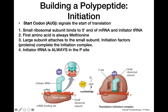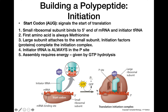Every subsequent tRNA is going to come into the A site first. This assembly process requires the expenditure of a GTP molecule, and the energy released by the hydrolysis of GTP is what drives the assembly of the initiation complex.